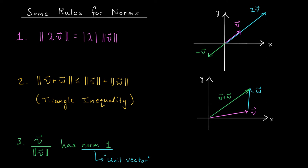Our second rule is called the triangle inequality, and it explains how norms behave with addition. It says that, in general, the length of a sum of vectors, V plus W, is less than or equal to the length of V plus the length of W.